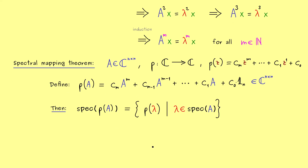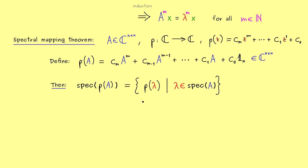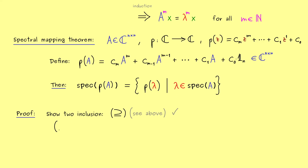Indeed, the theorem can be generalized to more functions than just polynomials, but then you really have to explain what it means to put a matrix into the function. For polynomials that was not a big problem, and it's also not so hard to prove. To prove a set equality we have to show two inclusions. The inclusion showing that the spectrum of p(A) contains the right-hand set we have already essentially shown — an induction argument with matrix additions handles the details. Therefore I want to focus on the other inclusion.